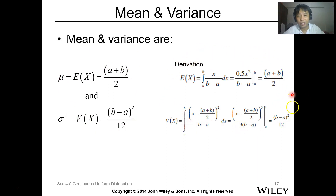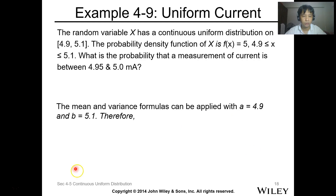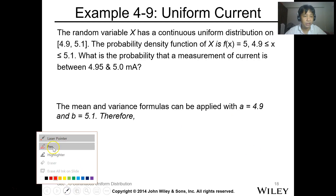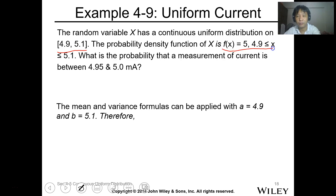To get the mean and variance, just utilize this derivation — it's simply integration. For the variance, substitute the mean into the formula with (x − μ) and the function 1 over (b − a). Now for the example: the random variable x has a continuous uniform distribution from 4.9 to 5.1, where f(x) = 5 over this range.